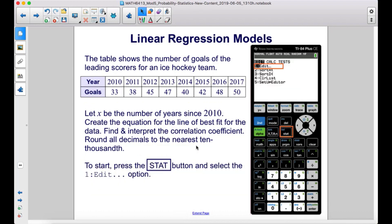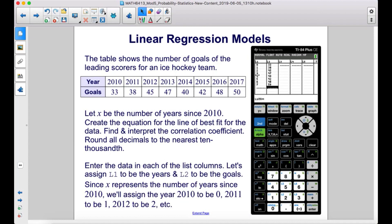To start, press the Stat button and select the One Edit option. Enter the data in each of the list columns. Let's assign L1 to be the years and L2 to be the goals. Since x represents the number of years since 2010, we'll assign the year 2010 to be 0, 2011 to be 1, 2012 to be 2, etc.